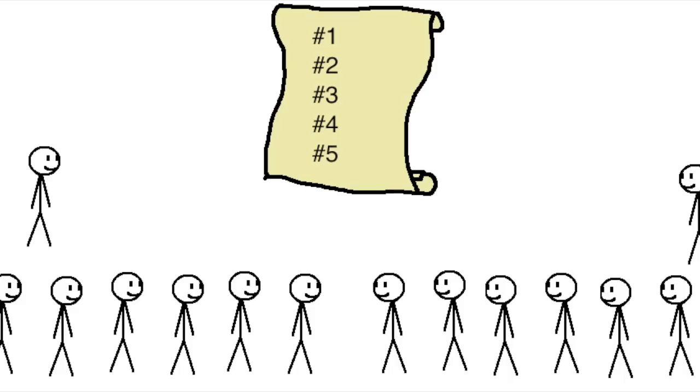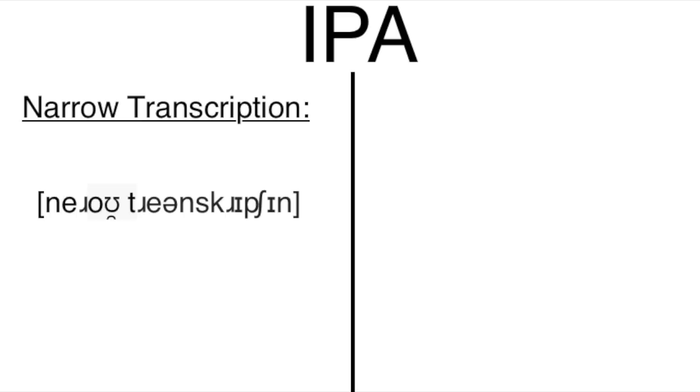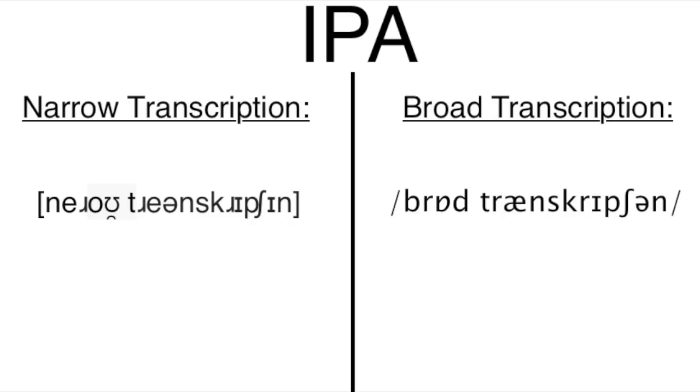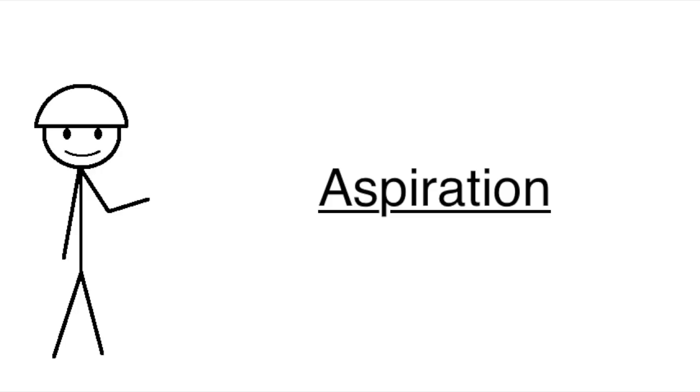That's all the rules for how they decided to expand the alphabet, but there's one more important thing to talk about, and that's the fact that there's actually two different ways IPA can be used. Narrow transcription, where you put what you're writing between brackets, and broad transcription, where you put it between slashes. I'm gonna use aspiration as an example to explain the difference.